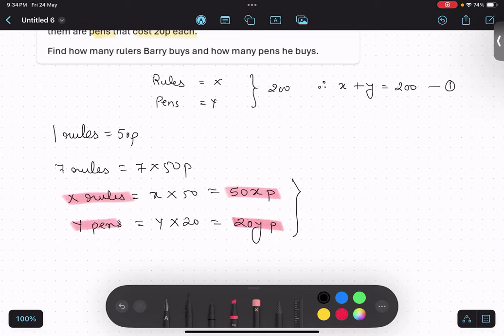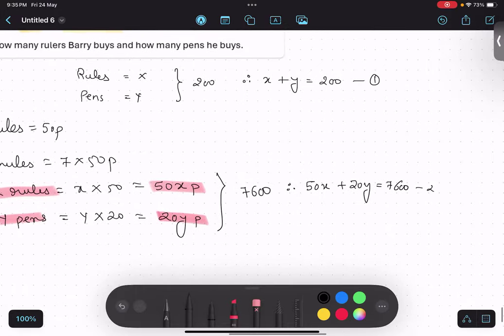Now, total is 7600. So therefore, my second equation becomes 50x plus 20y equals to 7600. That's the second equation. So what I'm going to do? I'm going to just use my GDC to solve this thing.